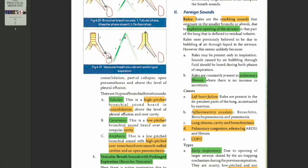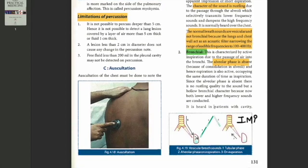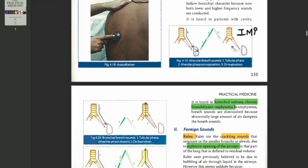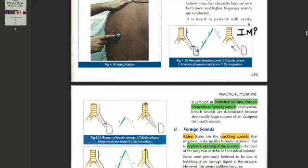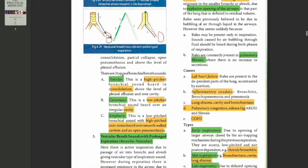We must know that vesicular breath sounds are the normal breath sounds over our lungs and chest. Bronchial breath sounds are normal over the trachea but abnormal when associated with a cavity, consolidation, or partial collapse with open bronchus. Because if the bronchus is open, then only we'll hear the inspiration and the expiration to the bronchus. If the bronchus is occluded completely, we will not get any breath sounds.